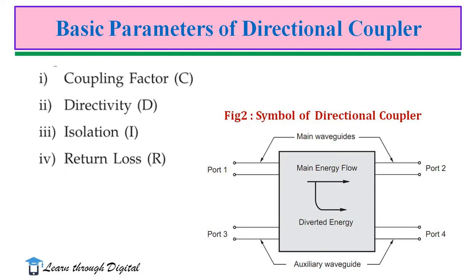There are four parameters to analyze the characteristics of a directional coupler: coupling factor, directivity, isolation, and return loss. Figure 2 illustrates the symbol of the directional coupler. From this we can identify which port is the coupled port and which one is isolated. Input is given to port 1 and output is obtained at port 2. At port 4, we get the coupled energy — that is, a fraction of the migrated power. At port 3, there will be no output.